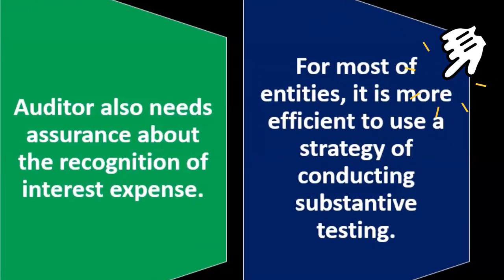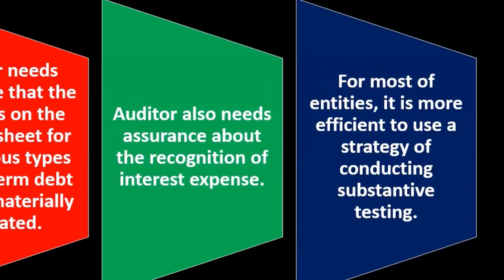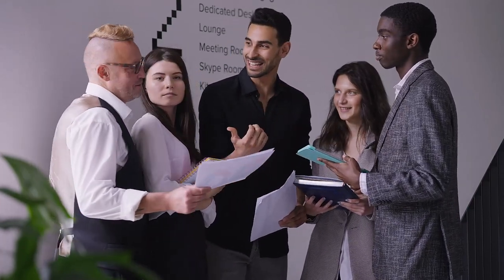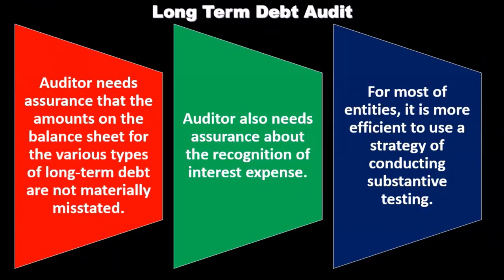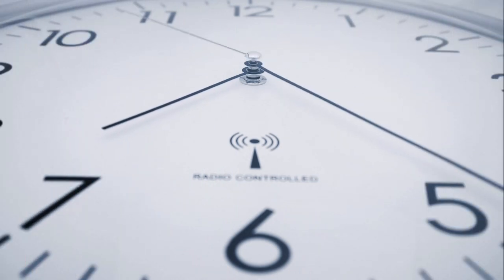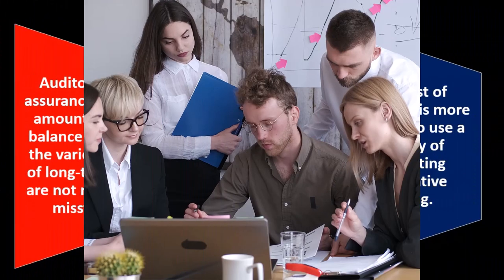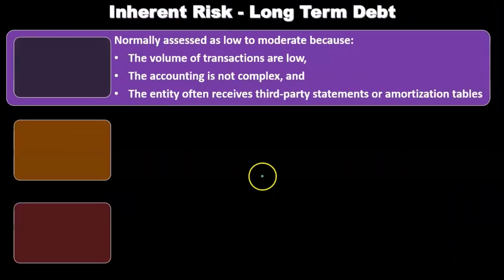For most entities, it is more efficient to use a strategy of conducting substantive testing. Our normal process in auditing is to test inherent risk and control risk, hoping to rely on controls and then do less substantive testing. Long-term debt is one area where we still want to look at the controls and understand them as part of the audit process. However, we're probably just going to spend more time on the substantive tests to fill up the bucket of assurance we need, because of just the characteristics of long-term debt. We'll be jumping to and doing more of the substantive procedures, although we still want to understand the internal controls.